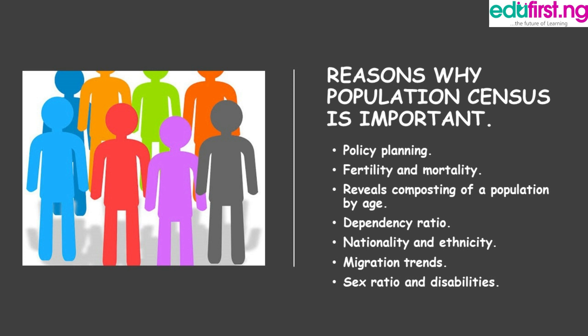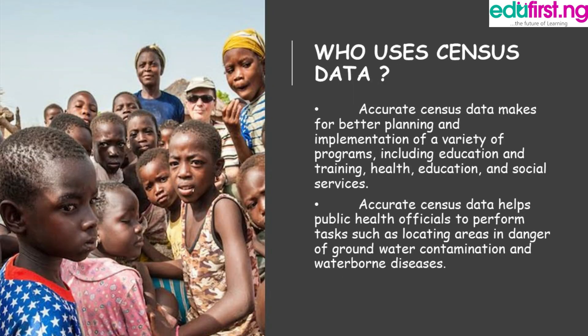So, who are the people or institutions that use census data? Accurate census data makes for better planning and implementation of a variety of programs, including education and training, health services, and social services. Accurate census data also helps public health officials perform tasks such as locating areas in danger of waterborne diseases.